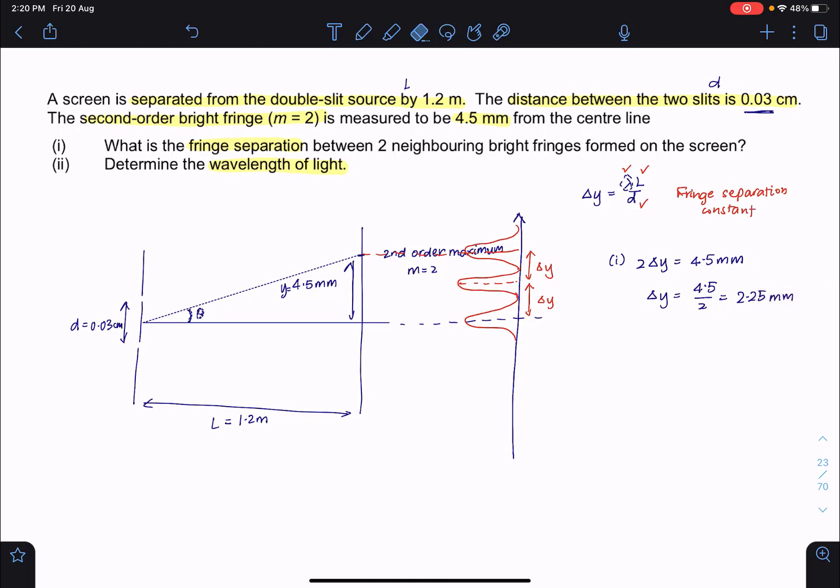Once we have this, finding the wavelength will be very easy. Because all we have to do is rearrange this equation. And then what we will have is we'll have lambda equals to delta Y times D divided by L.